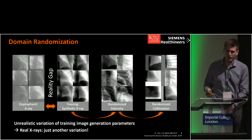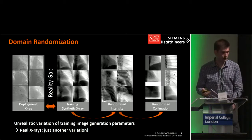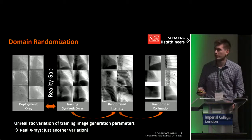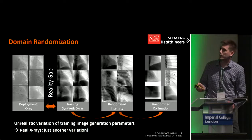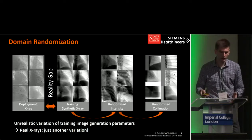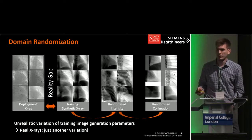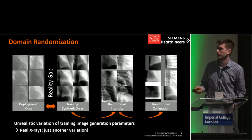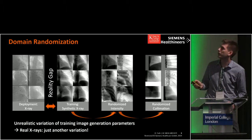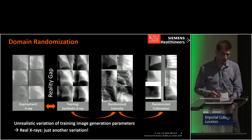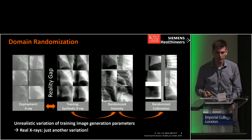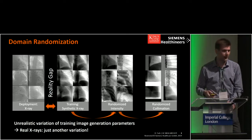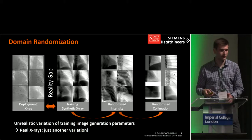In the first step we randomized the intensity of our generated DRR images, as you can see here — so we are generating unrealistic x-ray images. In the second step we randomized the collimation, generating random borders with random colors — sometimes white, gray, or black. Through domain randomization, what we hoped to achieve, and have achieved, is that the real x-rays appear to the network just as another variation of the data.